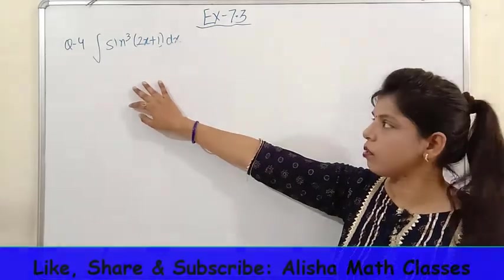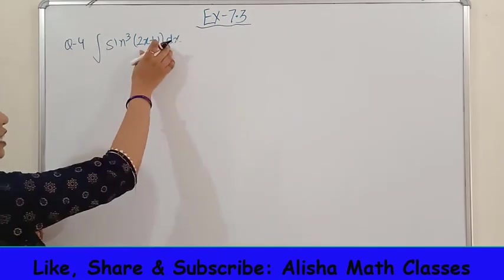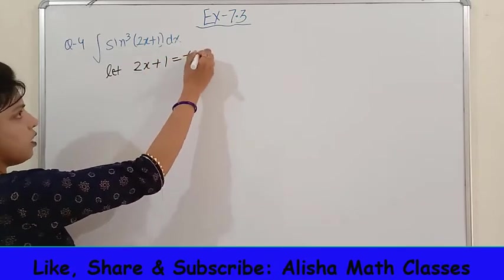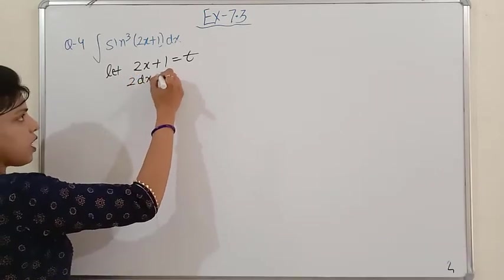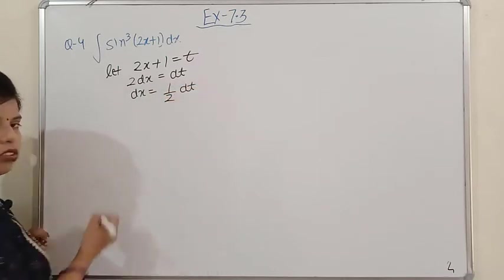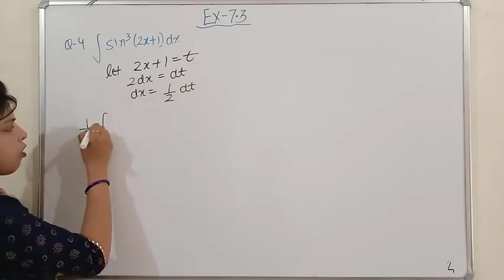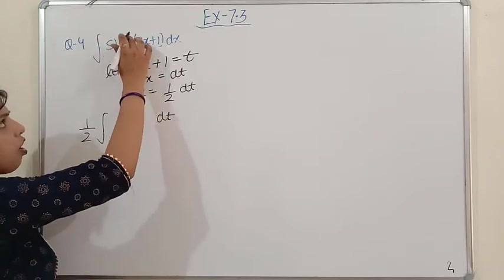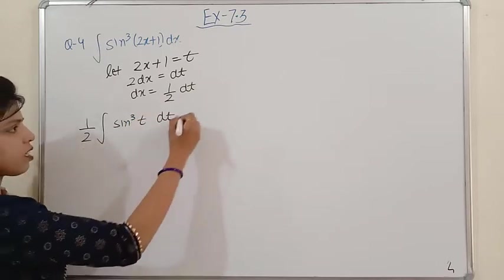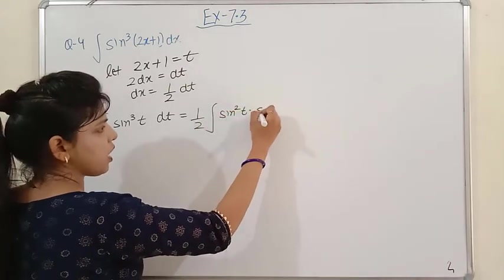Question number 4 is the integration of sin³(2x+1) dx. First, to simplify the argument, let 2x+1 = t. Differentiating: 2dx = dt, so dx = (1/2)dt. Substituting: we get (1/2)∫sin³(t) dt. Now break sin³t as sin²t·sint.